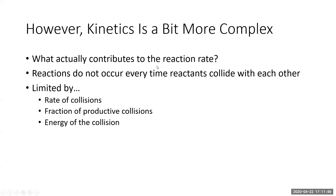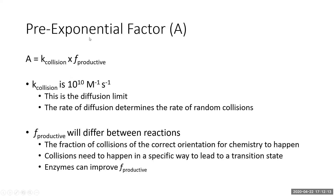Kinetics is more complex — reactions don't just occur every time a reactant collides with another. It's often limited by the rate of collisions, the fraction of productive collisions, and the energy of the collision. The first way we account for these limitations is using something called the pre-exponential factor A, which is the rate of collisions times the fraction of productive collisions.